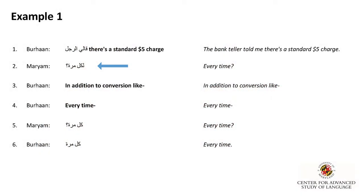Did you notice the repetition of the phrase every time? Let's look more closely at this conversation. The first time the phrase every time shows up is in line two. Mariam is asking in Arabic for more information. In line four, Burhan answers the question in English: every time. Mariam repeats her question in Arabic, seeking confirmation, in line five. And finally, Burhan responds with the same phrase, every time, here in Arabic as well.